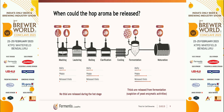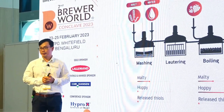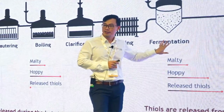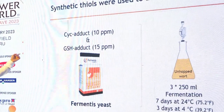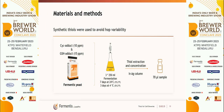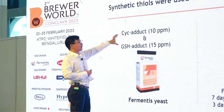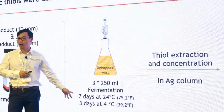We checked all the thiols released during the brewing scheme at four hopping stages. We found there are no thiols released during the hopping stage itself. Thiols are released from fermentation. To understand when exactly and how to facilitate it, we used synthetic compounds similar to the thiol precursors in hops — the cysteine-bound and glutathione-bound precursors — and put them into fermentation. The conditions were: fermentation 7 days at 24°C, then 3 days maturation, followed by thiol extraction analysis. We tested different yeast strains.